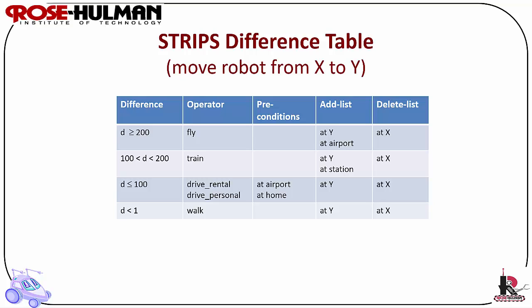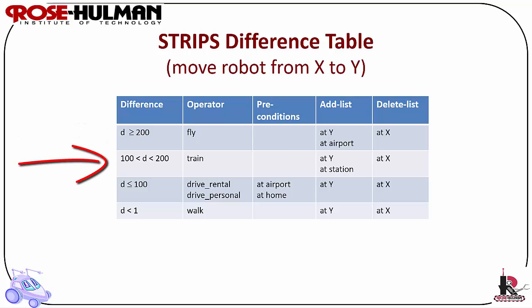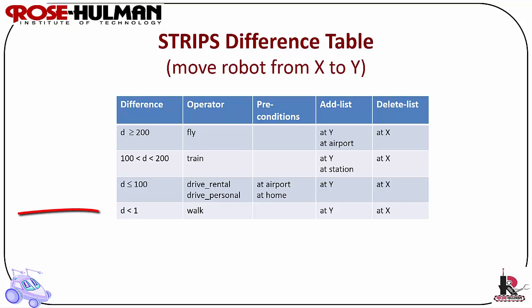The way this was done was with a STRIPS difference table. For example, if the robot had to move from point X to point Y: if the robot is more than 200 miles away, then it would fly, and the next state is that it has arrived at Y or it is at the airport. If the robot is between 100 and 200 miles away, then it can take the train, and the next state is either at Y or at the train station. If the robot is less than 200 miles away, then the robot will drive from home or the airport using a rental car or personal car. If the robot is less than a mile away, it will walk, and the final state would be to arrive at Y.